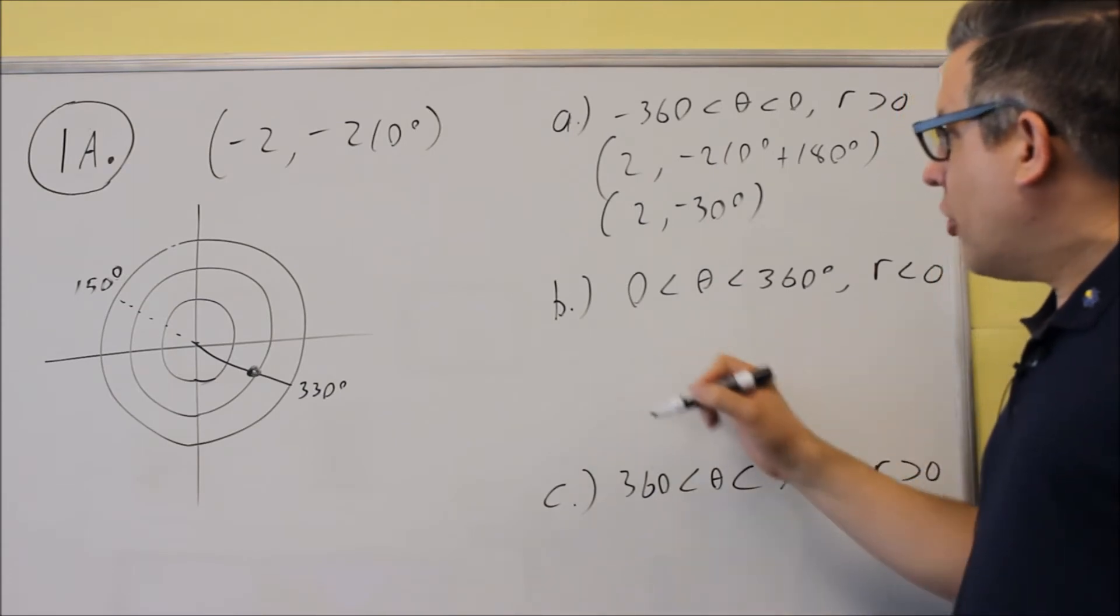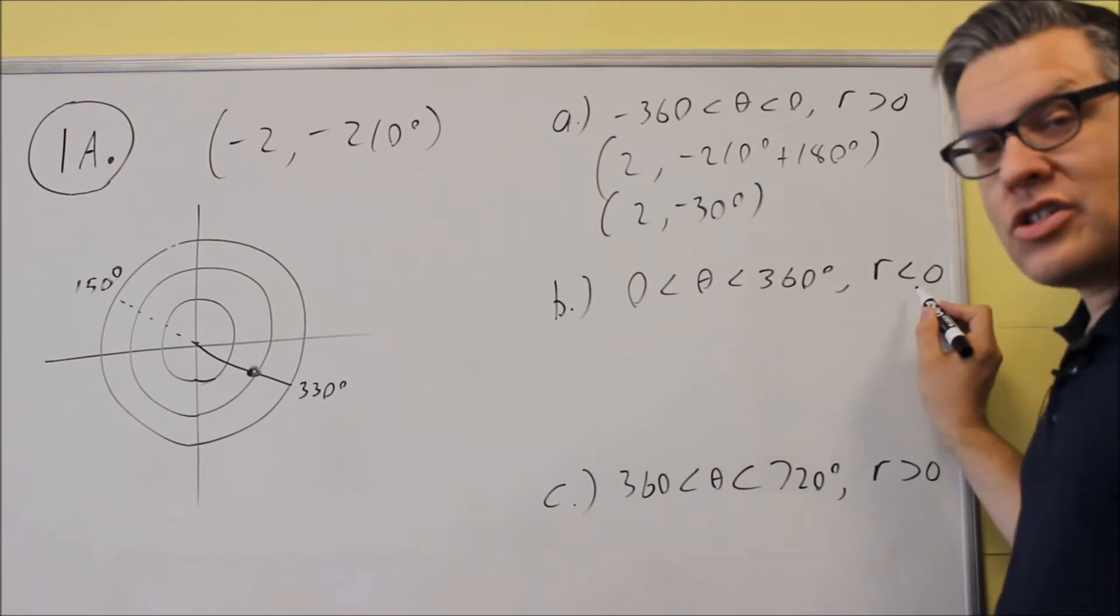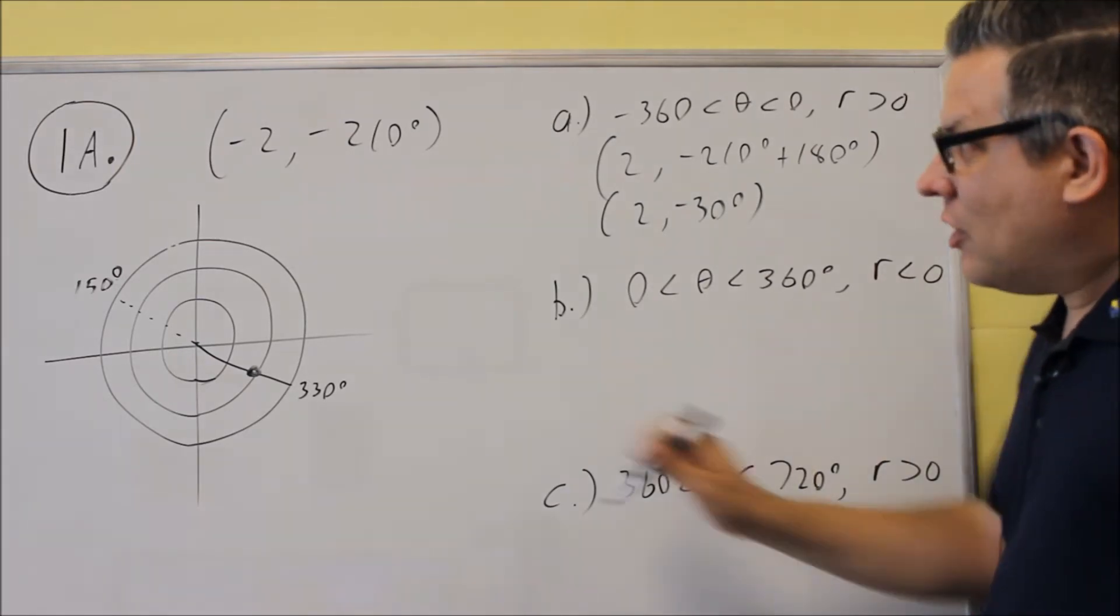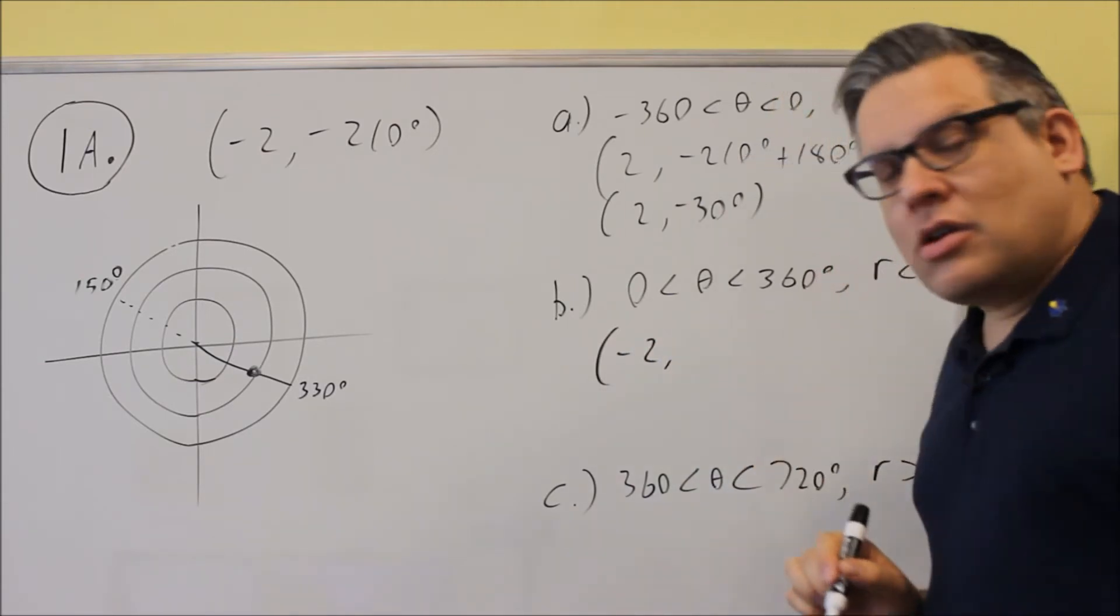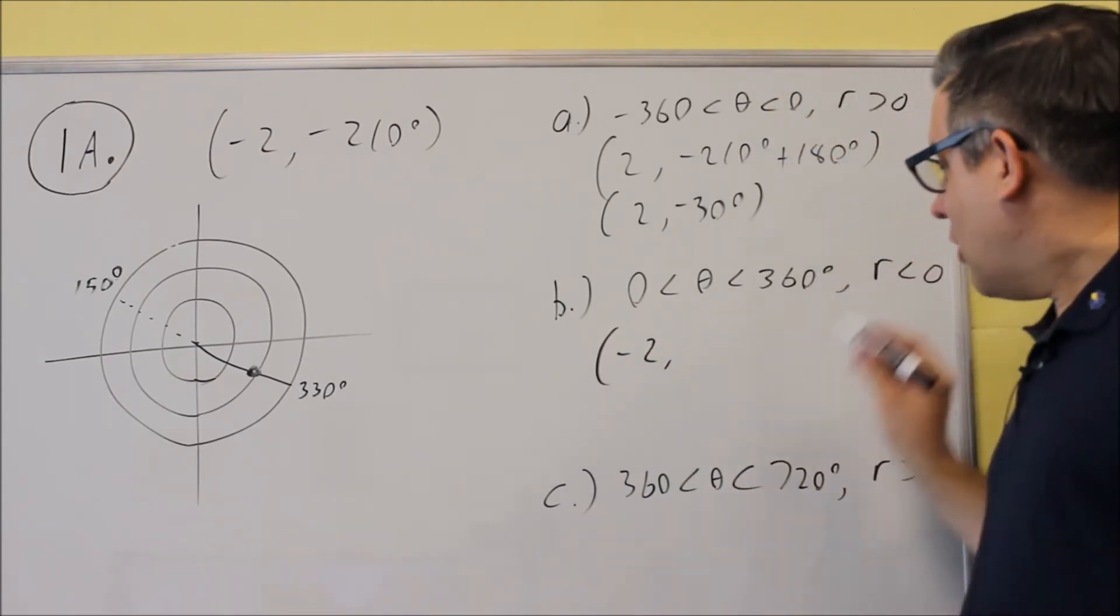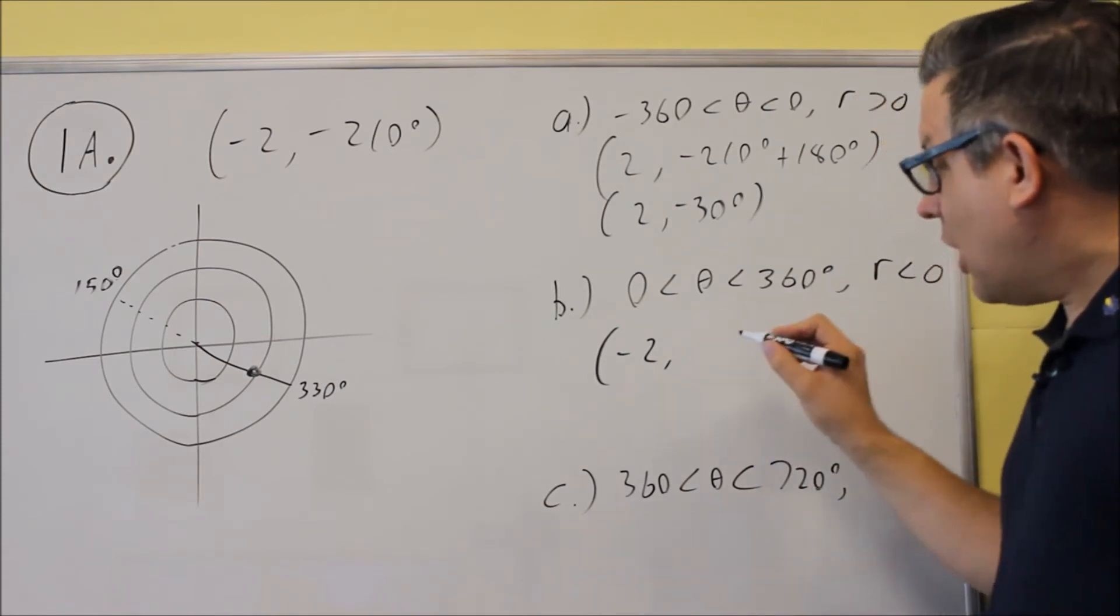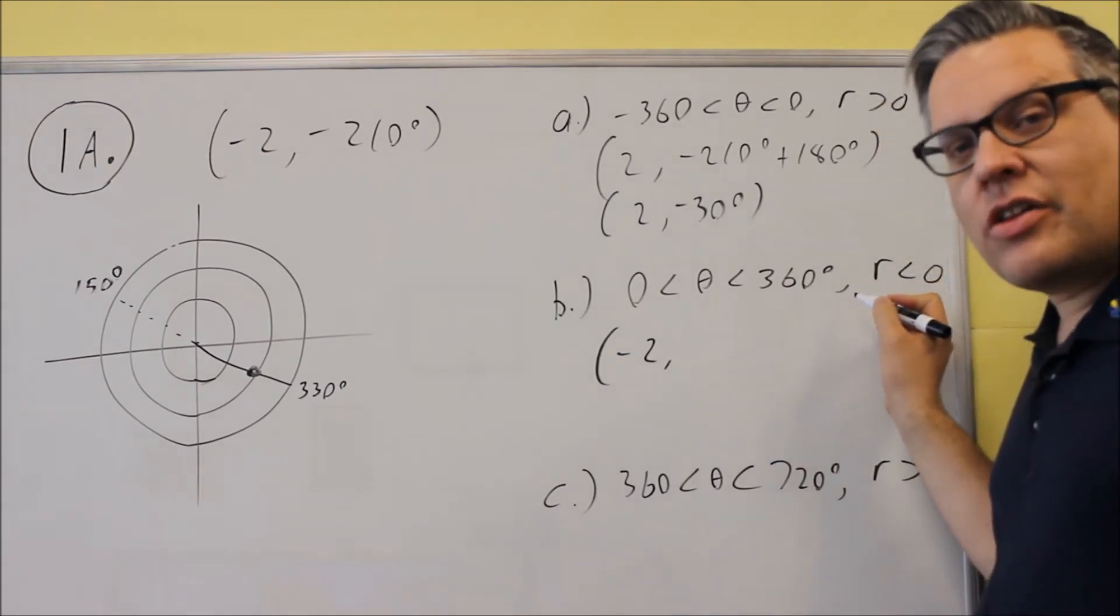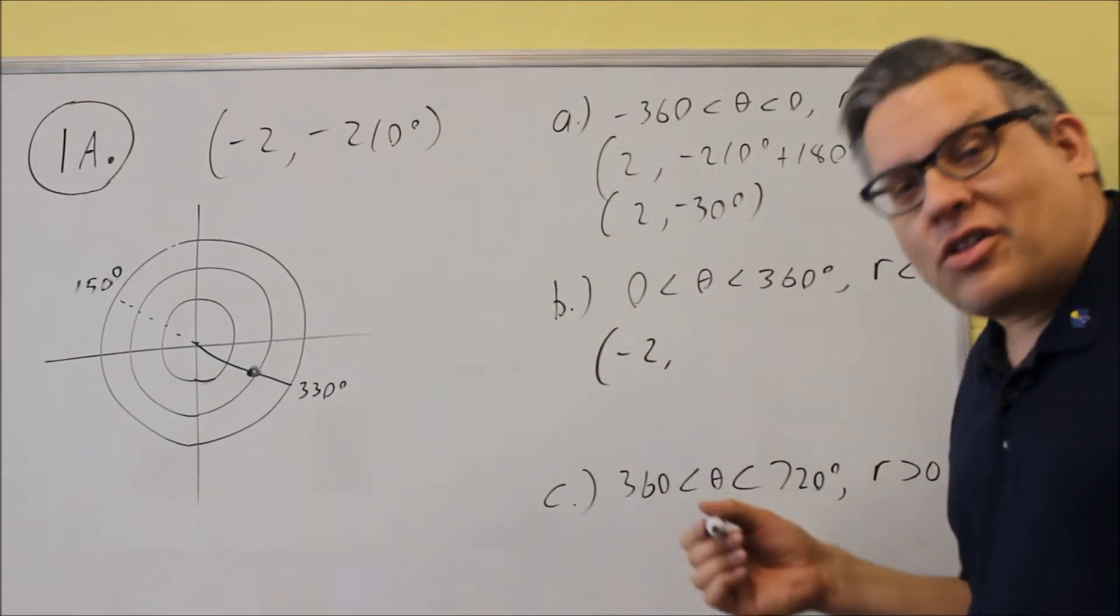Next, we're going to find an equivalent point where the R now has to remain as negative. Well, it already is negative there, which means that I can just put negative 2 down, keep it as is. Now, as I mentioned before, if you're not changing the sign of the R, so R was negative, we're going to keep R negative. That means you have to either add or subtract 360.